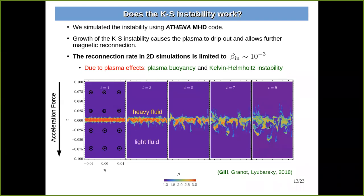We wanted to test this with an MHD simulation using the code Athena. The initial setup has a cold magnetized fluid sandwiching a hot layer of plasma slightly heavier in enthalpy density. We perturb this layer and see the Kruskal-Schwarzschild instability develop, completely destroying the layer as the hot plasma drips down. However, the answer is that we were not entirely successful: other plasma effects such as plasma buoyancy and Kelvin-Helmholtz instability produce vortices that keep the plasma near the reconnection layer. Globally, we could not get β much larger than 0.1 — instead we got β ~ 10^-3. We anticipate that going to 3D may allow us to suppress these effects.